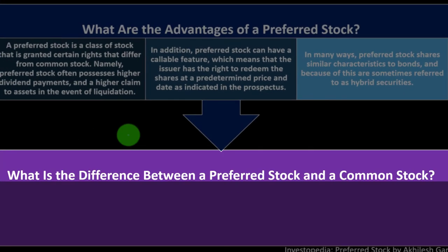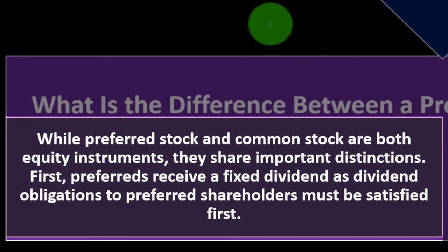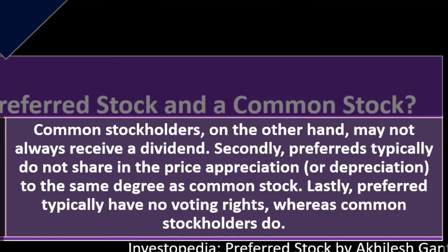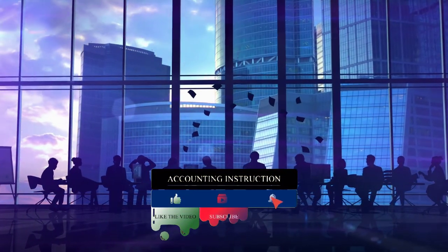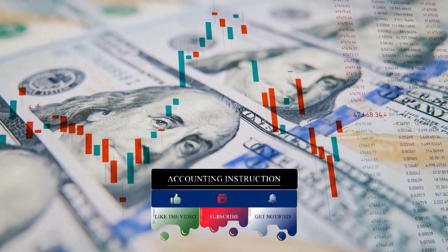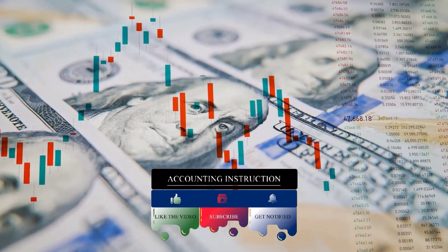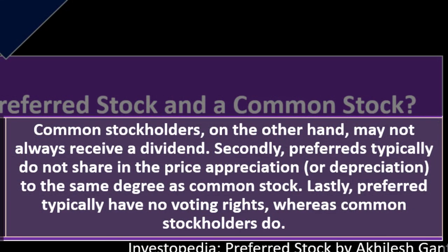What is the difference between preferred stock and common stock? While both are equity instruments, they share important distinctions. First, preferreds receive a fixed dividend — dividend obligations to preferred shareholders must be satisfied first, while common shareholders may not always receive a dividend. Second, preferred stock typically does not share in price appreciation or depreciation to the same degree as common stock. Lastly, preferred shareholders typically have no voting rights, whereas common stockholders do.